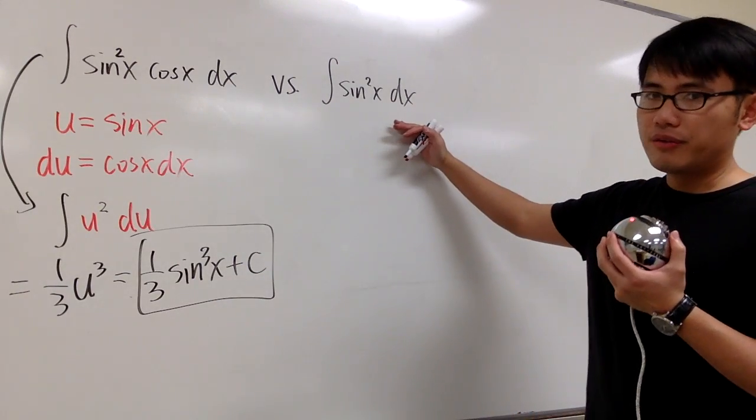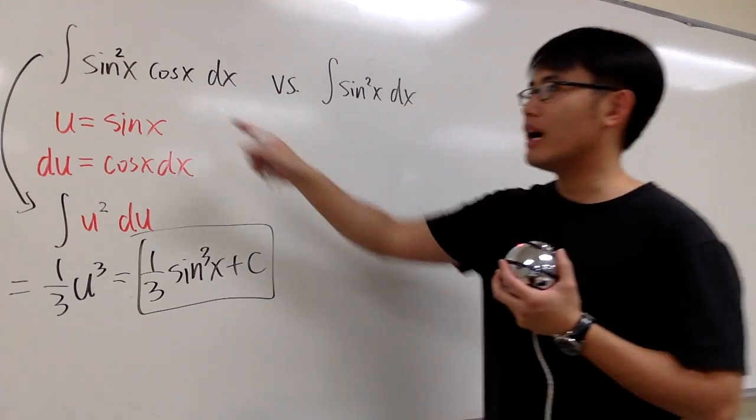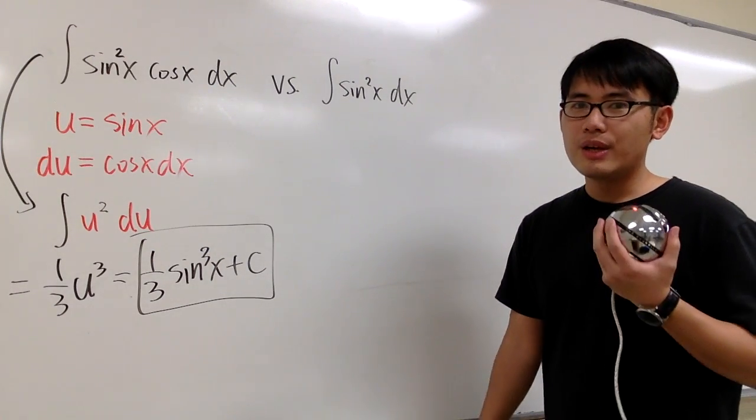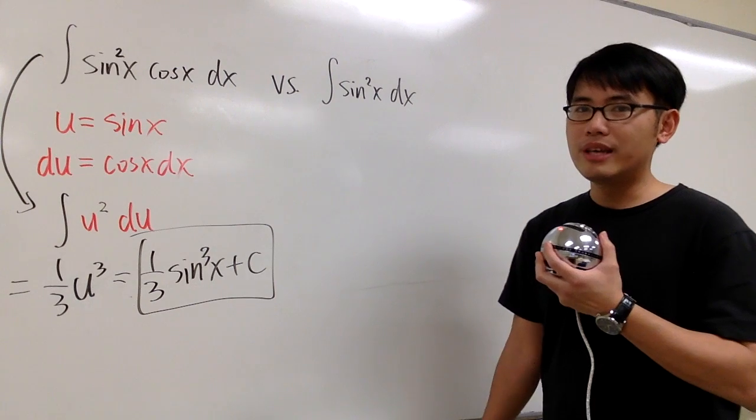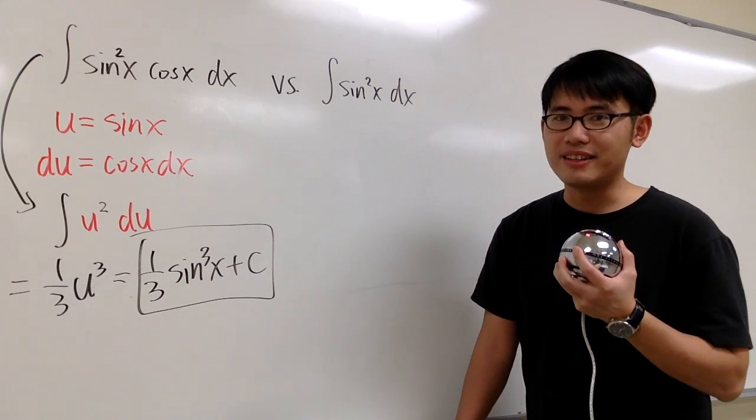And now let's take a look at this. How can we integrate sine to the second power x when we don't have the cosine x right here to help us out? Well, we have to think about how we can reduce the question to the easier case. And we can do that by using identities.